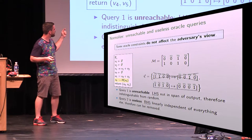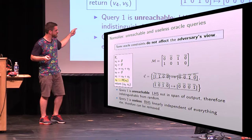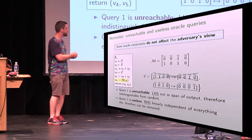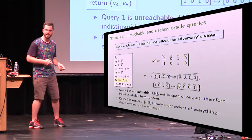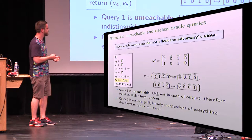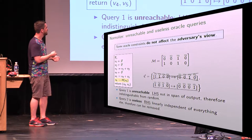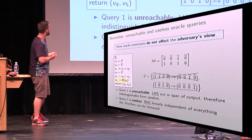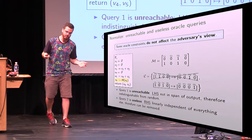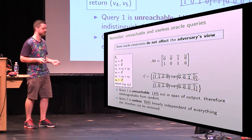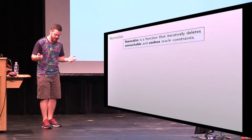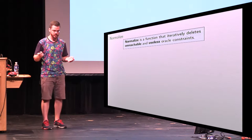Similarly, V5 is reachable — it's literally the second output row — so the distinguisher can query at that point. But the output of that query is useless for distinguishing because it has zeros there; V6 doesn't appear in the output in any way. So again, we can remove this and it looks random to the distinguisher. The normalize function removes these useless and unreachable oracle constraints — it just removes the ones that don't affect the output.